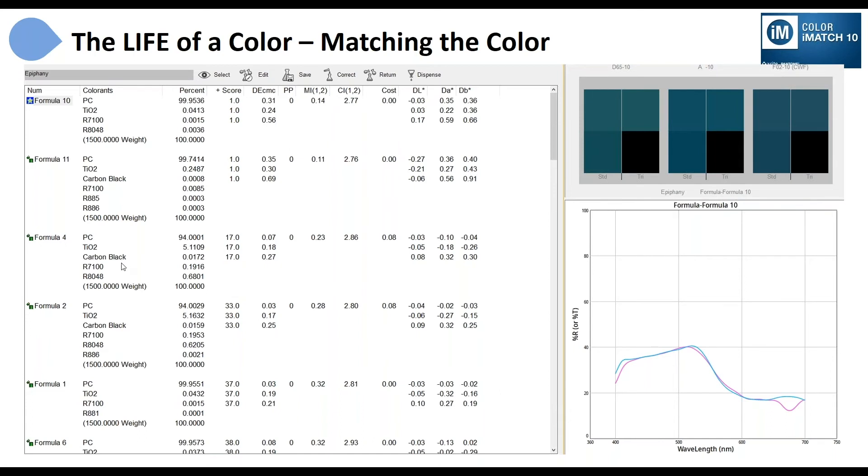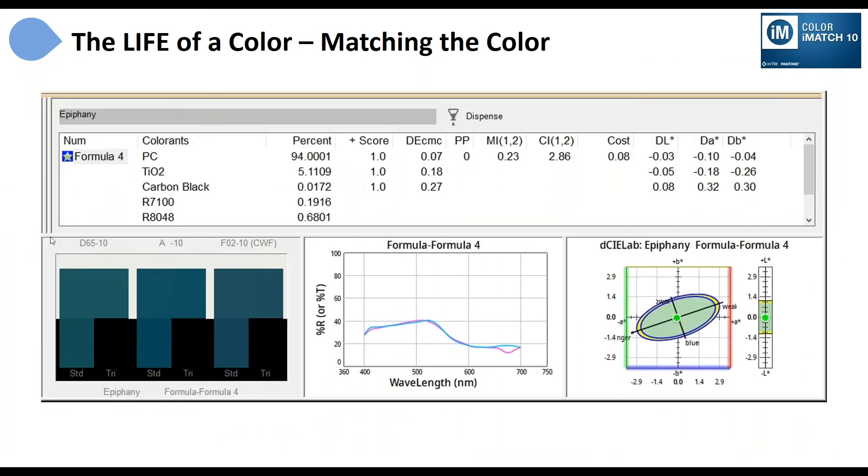And I might decide, you know what, I really like this formula, formula four. I can see the reflectance curve over here of whichever one I've selected. I can see visually how the color will look under different light sources or illuminants. So I may pick my formula, formula four, there it is, and I can go ahead then and scale that to whatever batch size I want to make. Typically in this process, of course, we're doing a new color match, so we're going to make a relatively small lab sample to prepare.